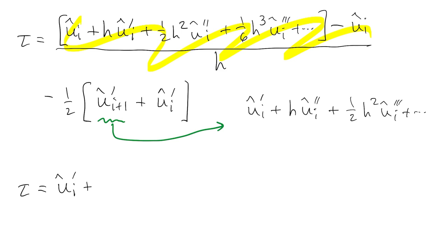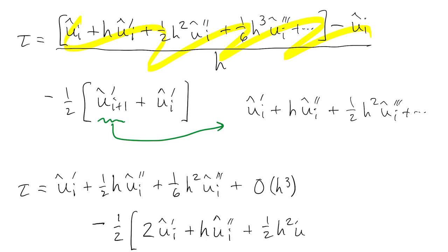So now if we look at this first term, the u-hat i's cancel out. Everything else is divided by h. And in the second term, the u-hat i primes combine. Everything else hangs around.